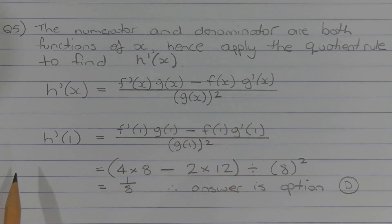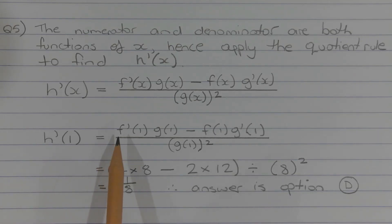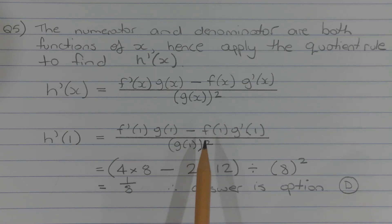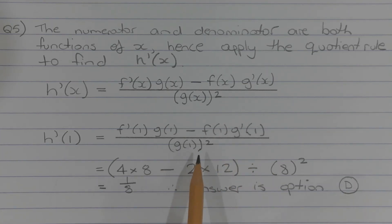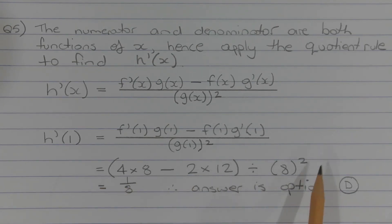To find the gradient of the tangent at x equals 1, we need to evaluate h dash of 1, and that equals f dash of 1 times g of 1 minus f of 1 times g dash of 1, over g of 1 all squared, which equals 4 times 8 minus 2 times 12 divided by 8 squared, which equals 1 over 8.